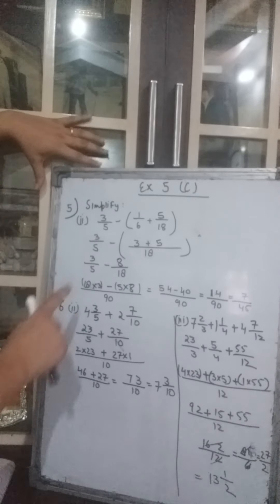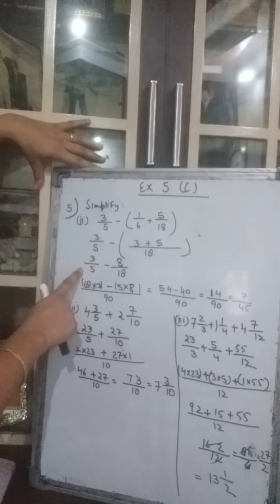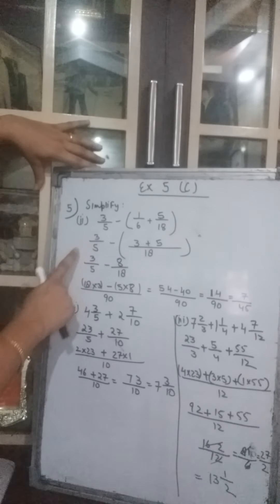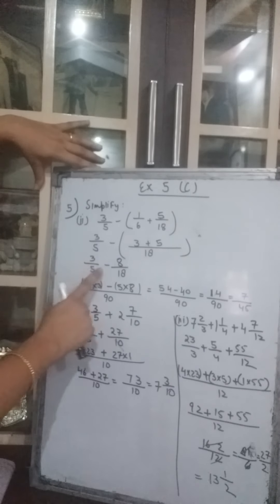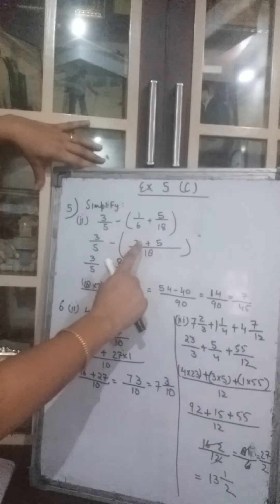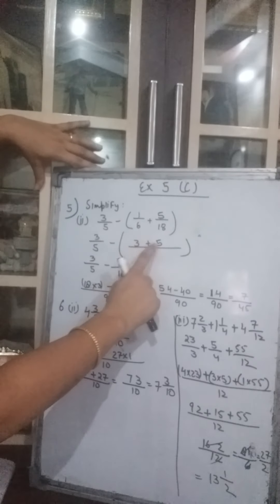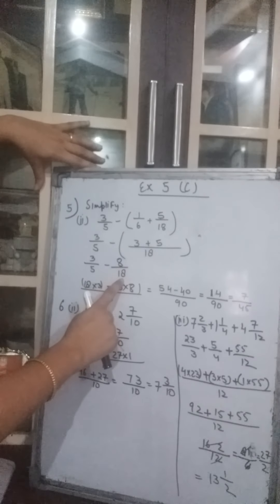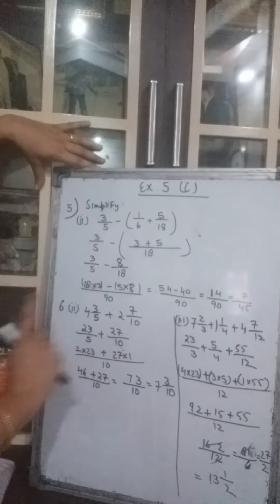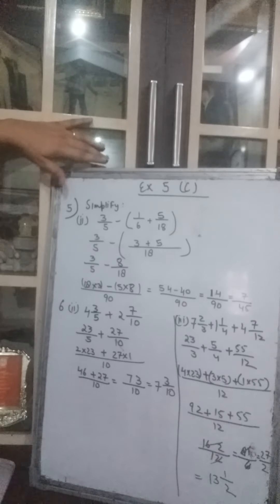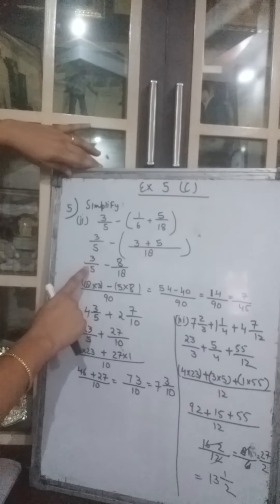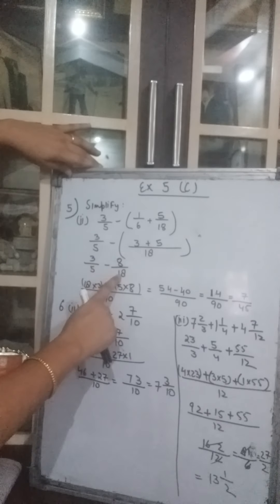So here it will be 3 upon 5 remaining as it is. 3 upon 5 minus, and now this is 3 plus 5 gives you 8 upon 18. Now what we will do? We will find out the LCM of 5 and 18.